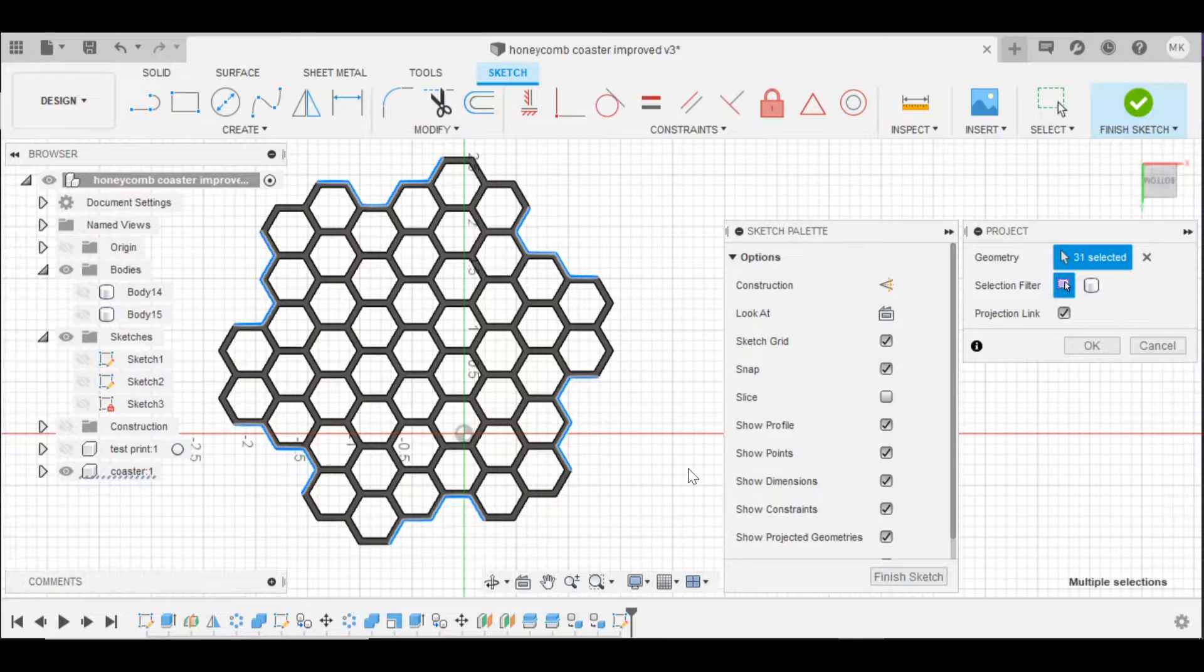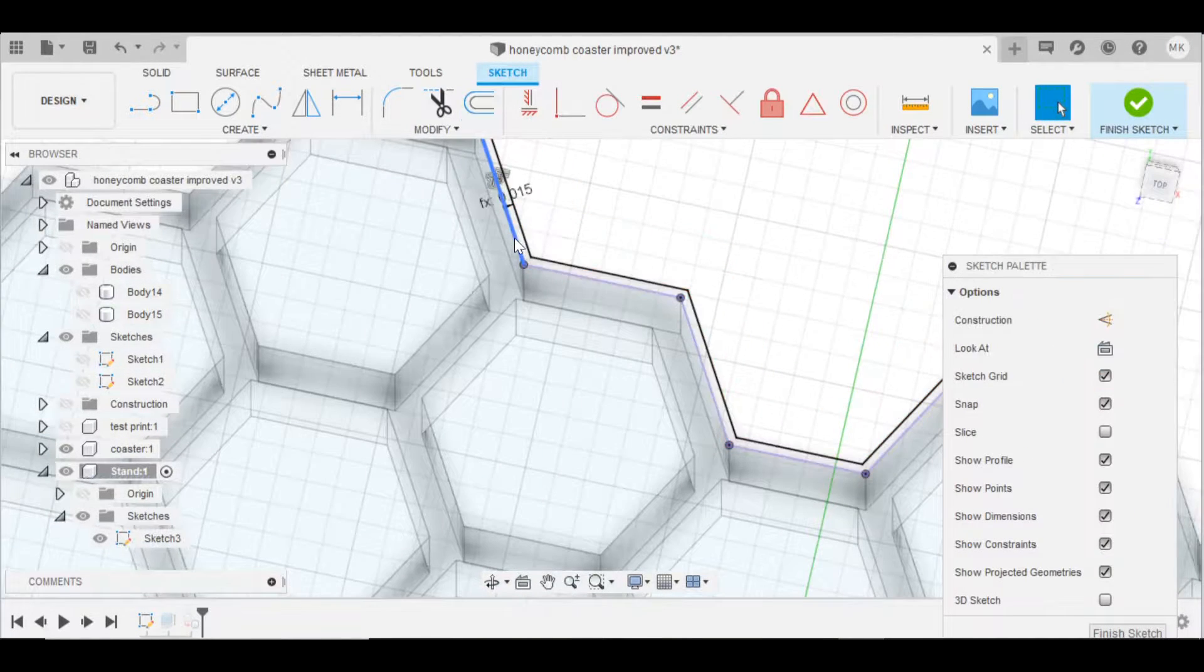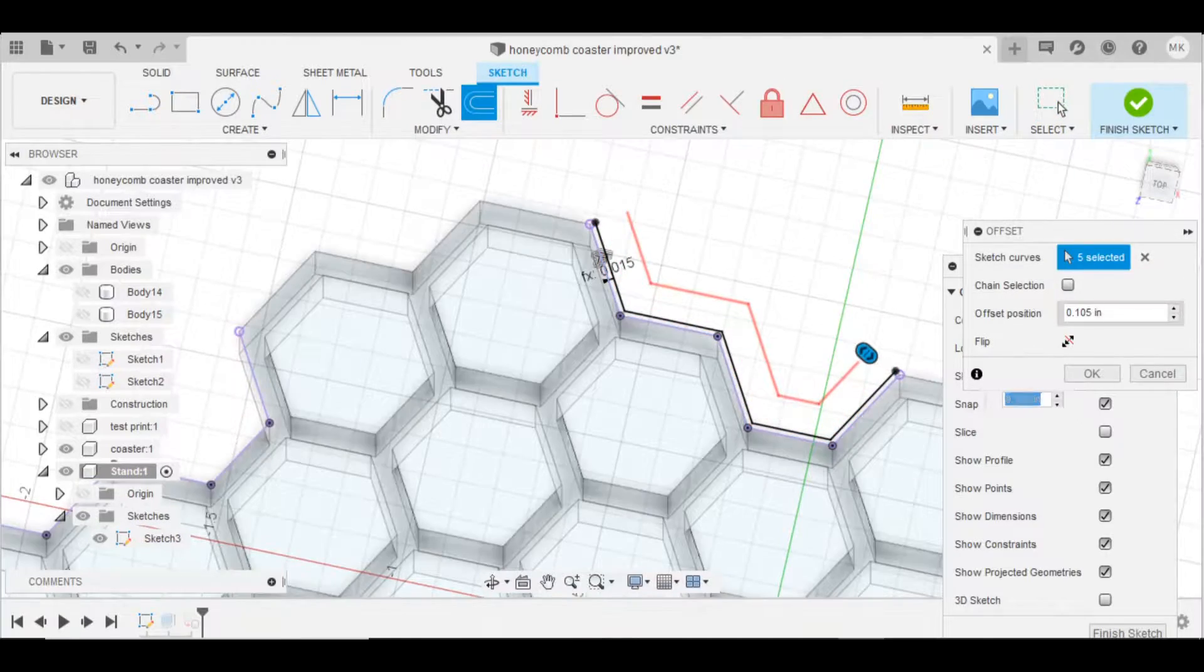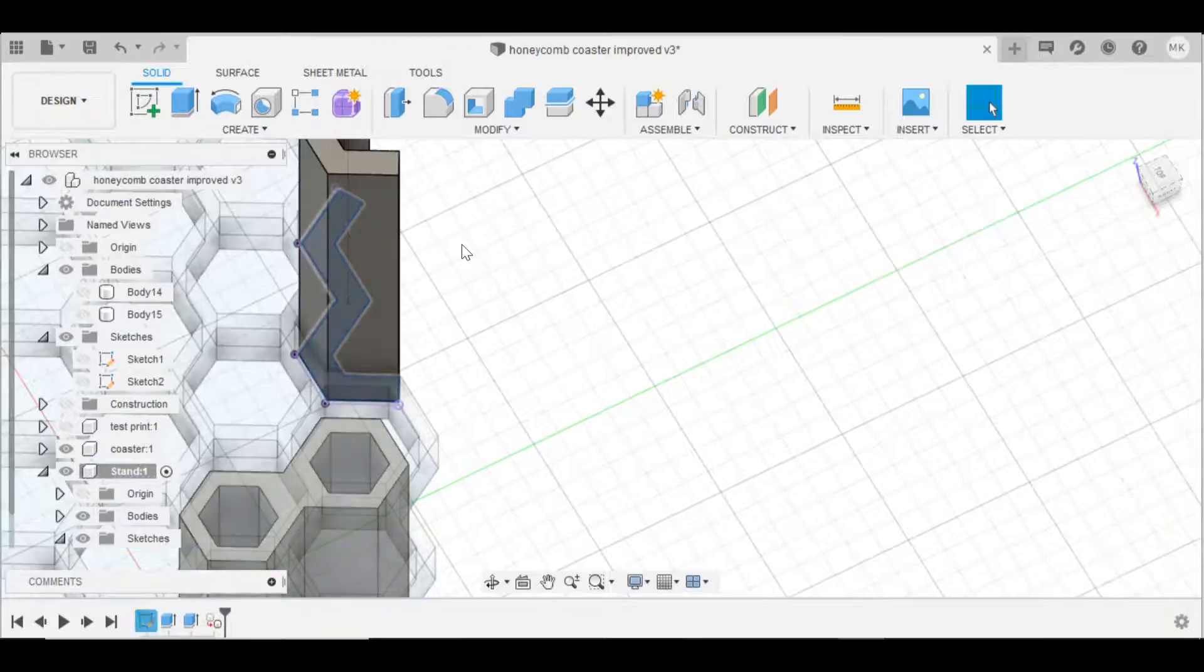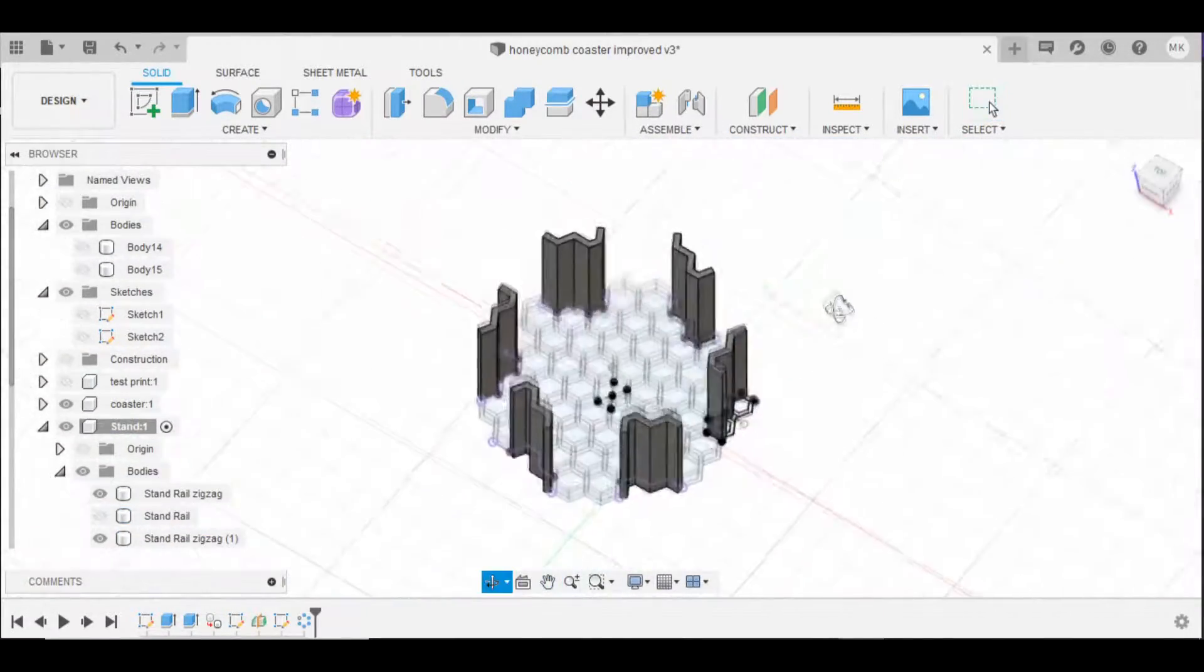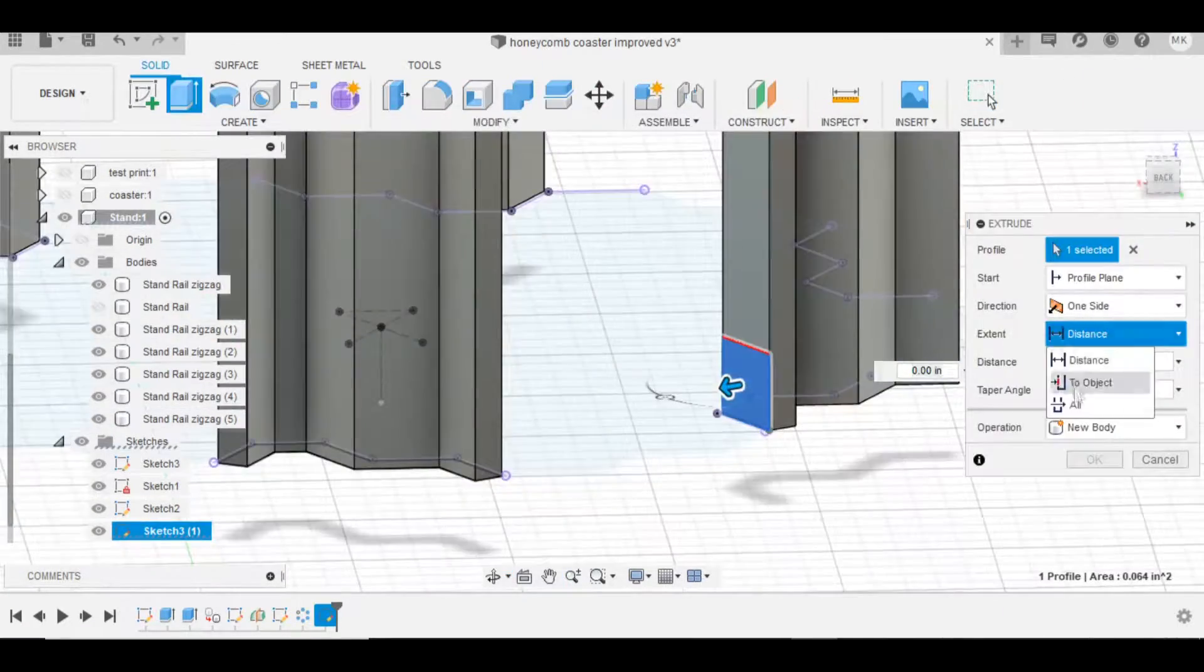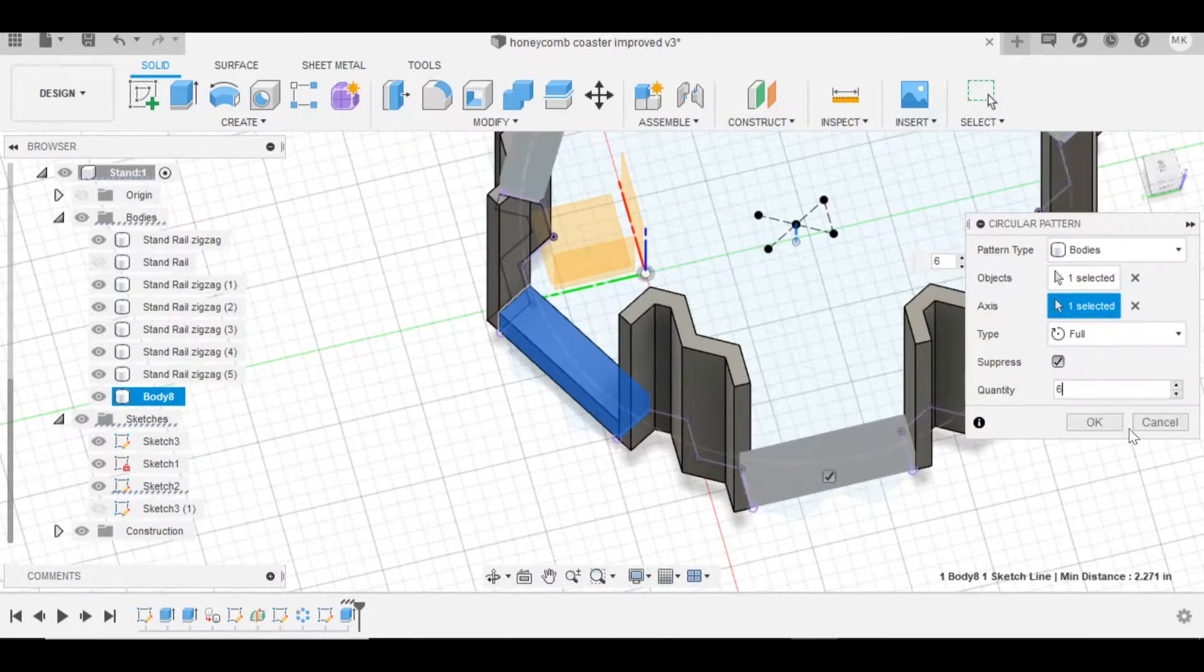The stand is designed around these zigzag rails that fit into the coaster's concave edges. I offset the rails 15 thousandths of an inch out from the coasters but as you'll see later on, this made for a tighter fit than I would have liked. I later updated the model to double the space between the stand and the coasters and this change is reflected in the STL file available on my website.